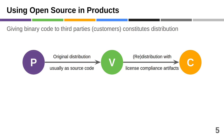Here's the basic plot. There's an open source programmer who writes some code, makes it available under an open source license, and puts it on the web — that's the original distribution. Then you, the vendor, who's interested in putting open source as components in your products, take that, put it into a product, and sell a license to your own customers. That is the redistribution, and it needs to be done in a way where the vendor complies with the open source licenses, which leads to so-called license compliance artifacts.